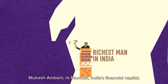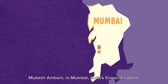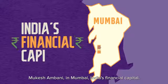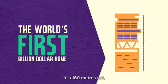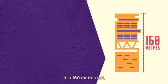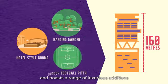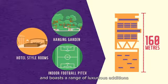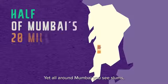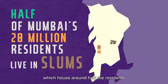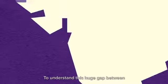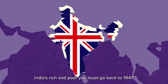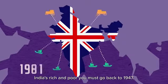This is the home of the richest man in India, Mukesh Ambani, in Mumbai, India's financial capital — often called the world's first billion dollar home. It is 160 meters tall and boasts a range of luxurious additions. Yet all around Mumbai you see slums, which house around half the residents in India's richest city.